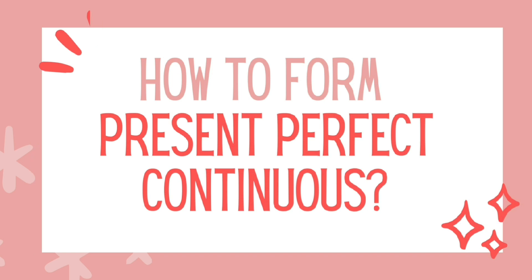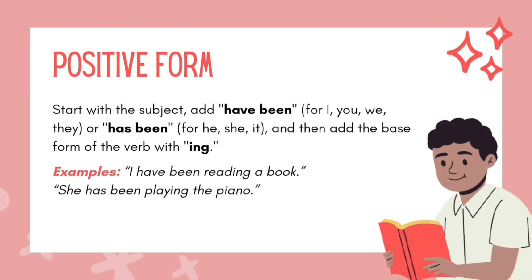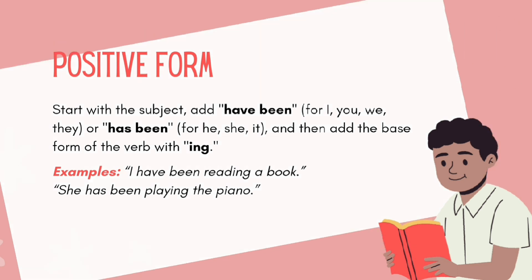How to form present perfect continuous? Positive form: Start with the subject, add have been for I, you, we, they or has been for he, she, it, and then add the base form of the verb with -ing. Examples: I have been reading a book. She has been playing the piano.